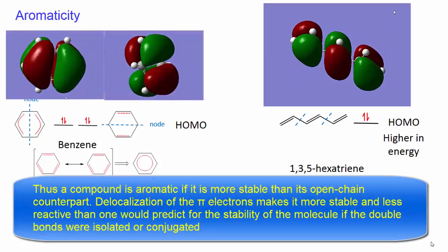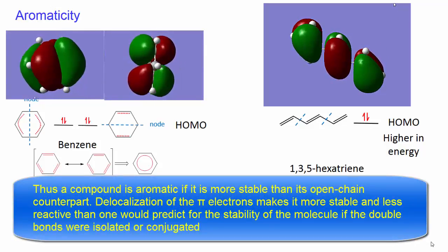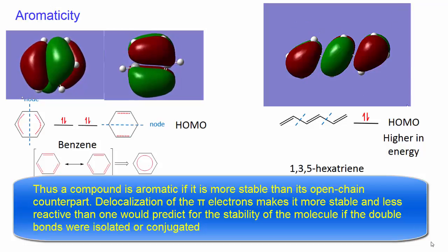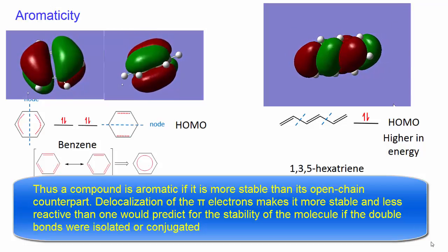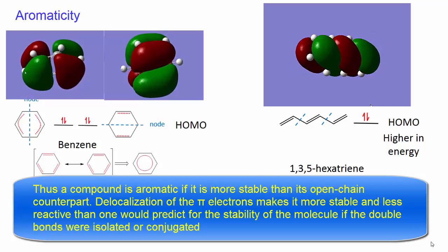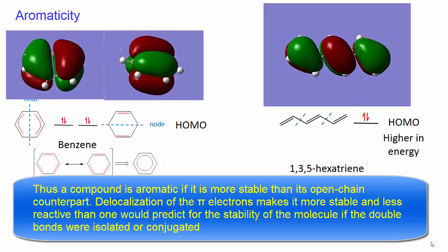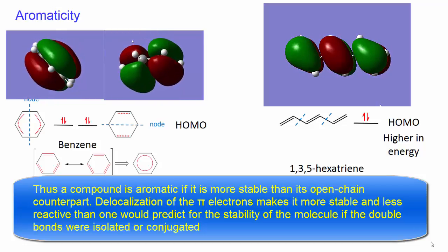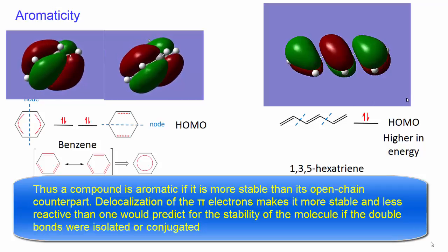Thus, a compound is aromatic if it is more stable than its open chain counterpart. Delocalization of the pi electrons makes it more stable and less reactive than one would predict for the stability of the molecule if the double bonds were isolated or conjugated.